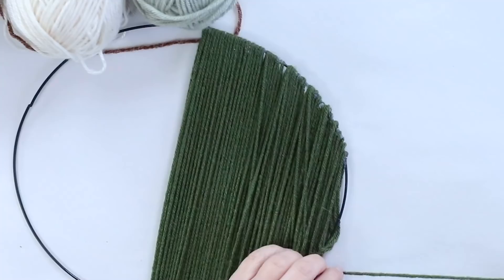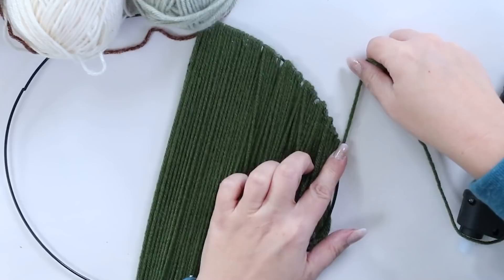And again, with the end, you're going to have to add in quite a bit of hot glue just to hold it in place and make sure you cover that wreath form. Once I got all the yarn on there, I cut it off.